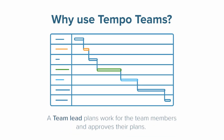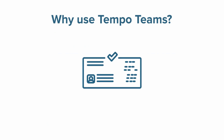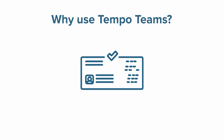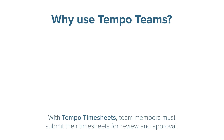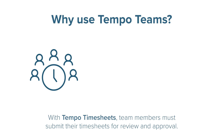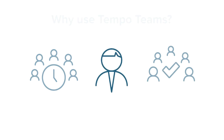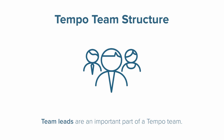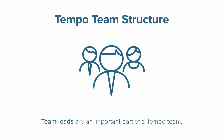A resource manager or team lead plans work for the team members and approves their plans. Finally, if your organization has adopted the timesheet approval process with Tempo Timesheets, team members must submit their timesheets to their team lead for review and approval. Team leads are an important part of a Tempo team, and who's assigned this role in Tempo depends on the type of team it is.